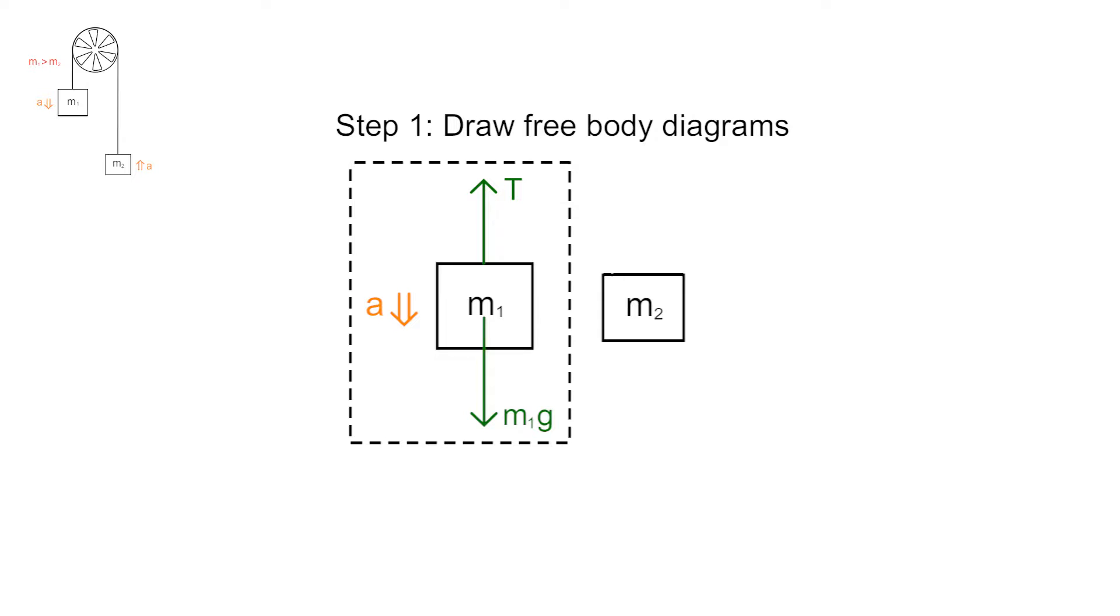M2 also has its own gravitational force acting downward and the same tension force acting upward. It accelerates upward, so the tension force must be stronger than its gravitational force.